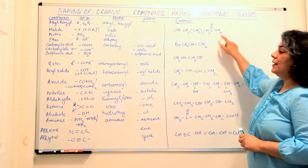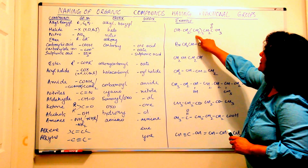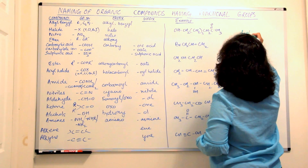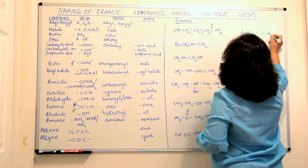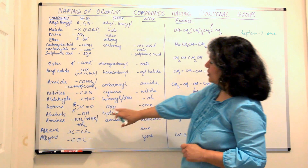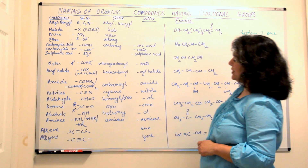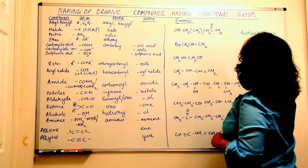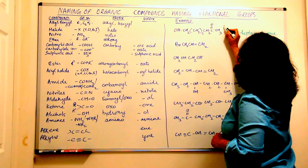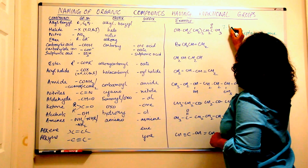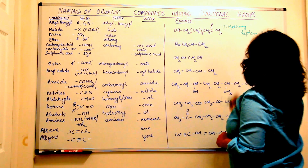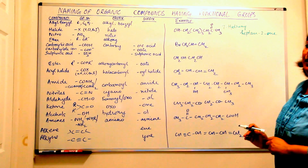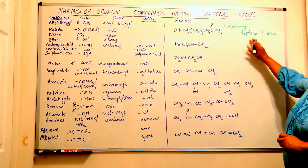So this compound is a heptanone. The hydroxy group — when an alcohol is secondary, it is written as a prefix: 'hydroxy.' The hydroxy is at the last carbon. Since it's a heptanone, the seventh carbon is the last, so it would be 7-hydroxy. There would be no space between these two parts.